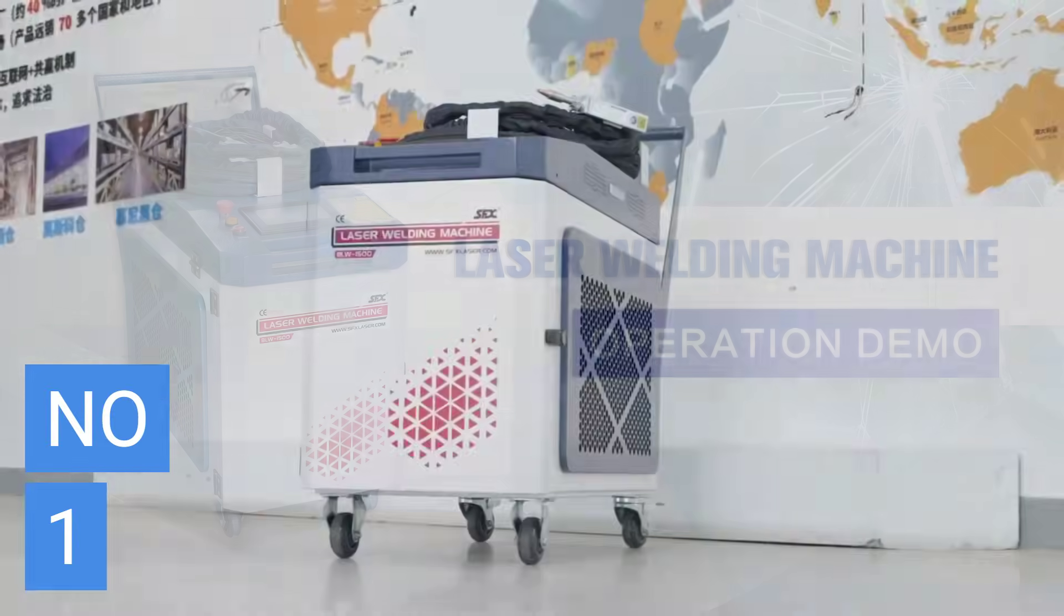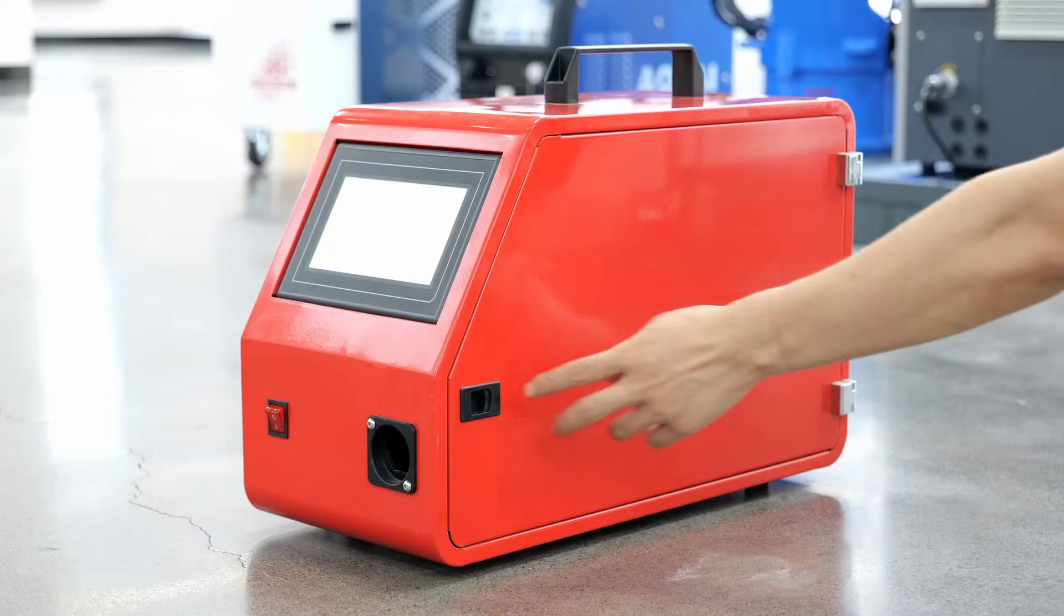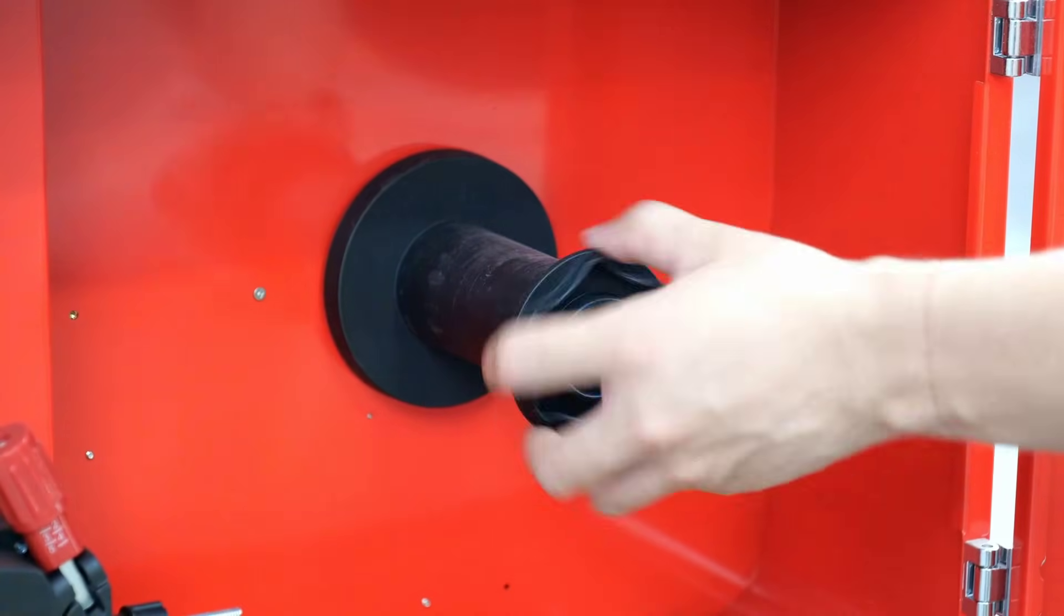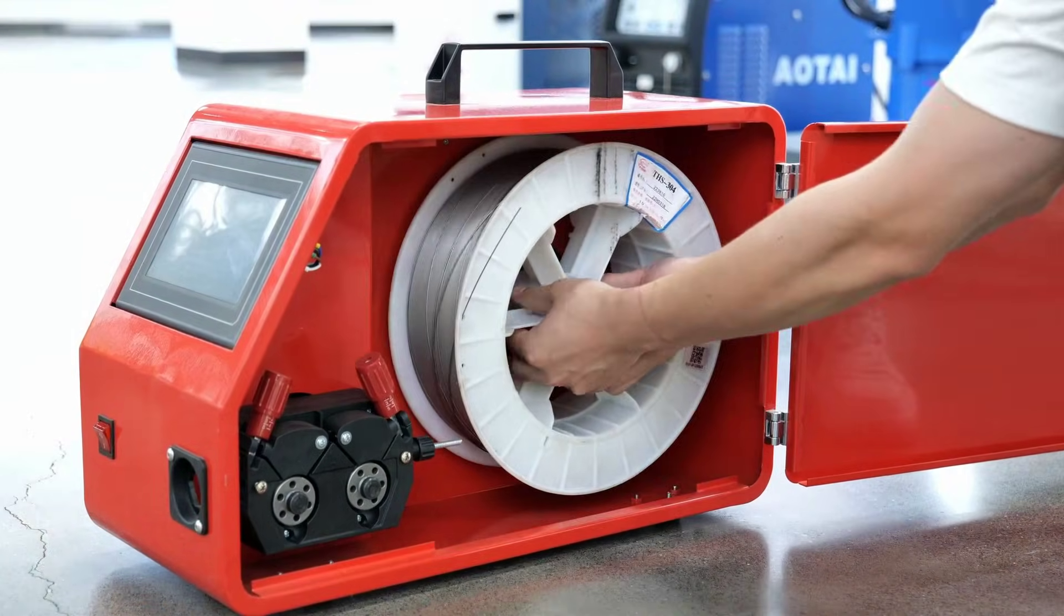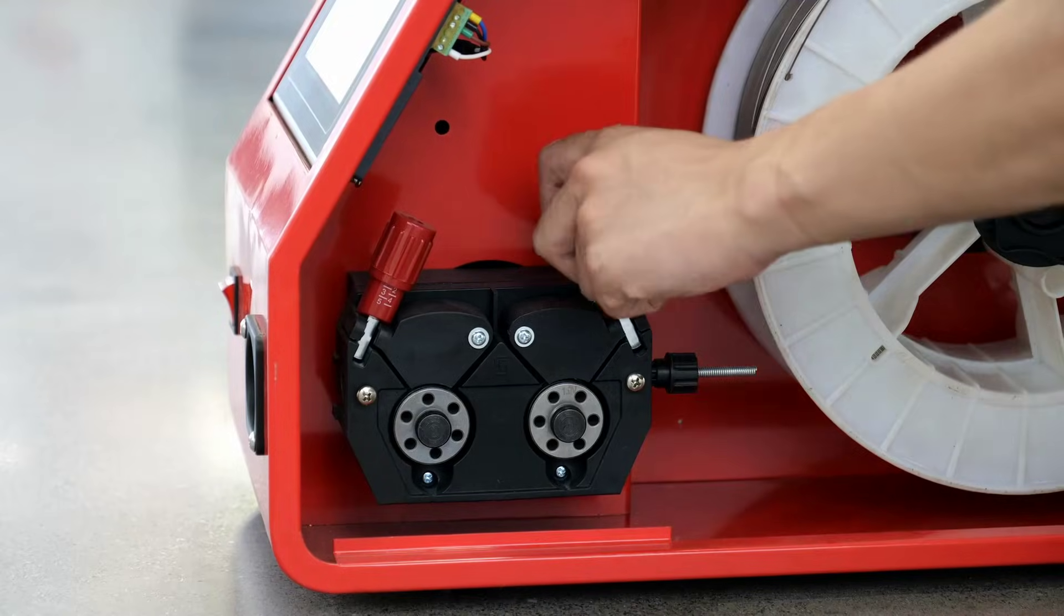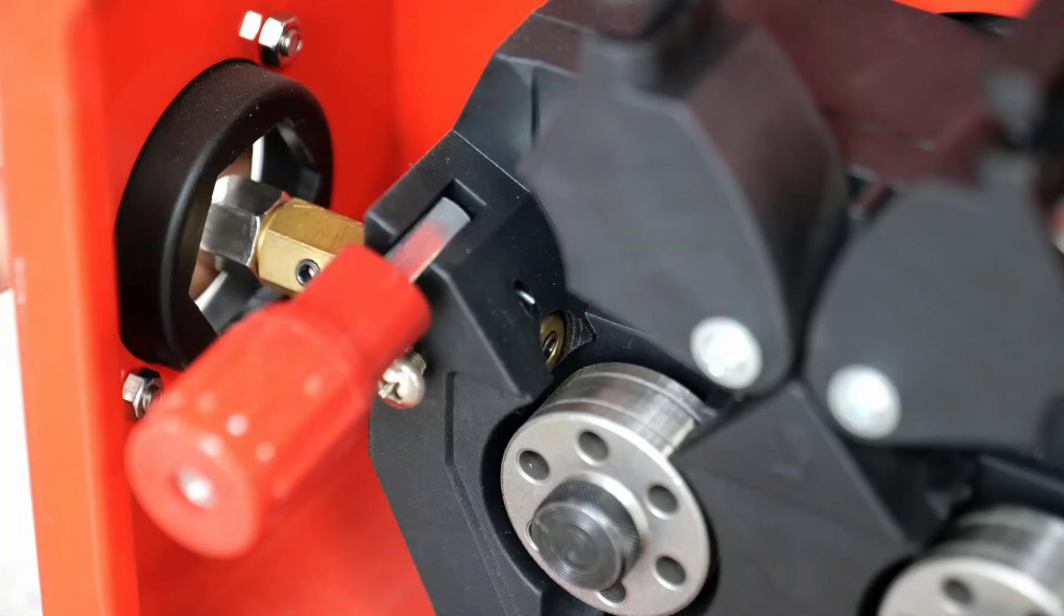The 2000W 2-in-1 laser welding machine is a high-performance tool that earns its spot among the best laser welder machines for professionals and serious users. Designed for versatility, this powerful handheld fiber laser welder is ideal for working with a variety of metals, including stainless steel, aluminum, titanium, carbon steel, and copper.